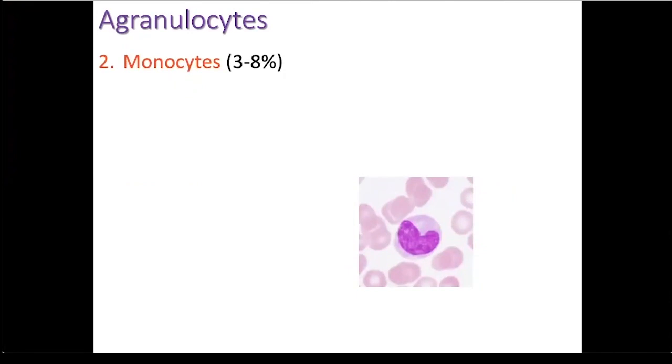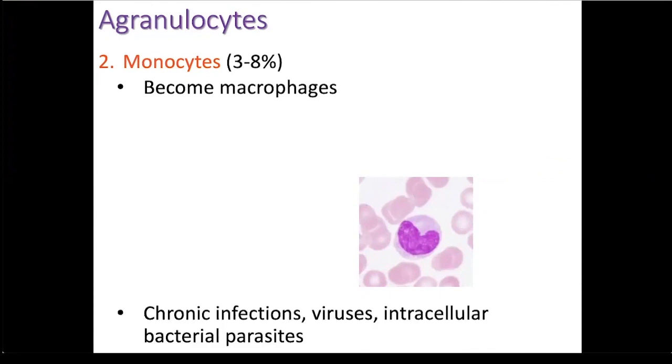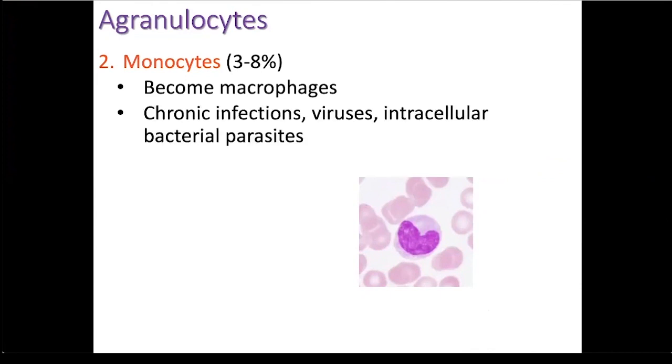The second agranulocyte is a monocyte. Monocytes make up about 3 to 8 percent of the leukocytes. They are the largest of the leukocytes. When they leave the blood, they become macrophages. Macrophages are phagocytic cells, and their numbers are elevated when you have a chronic infection, a viral infection, or intracellular bacterial parasites. These are bacteria that live within the cell.